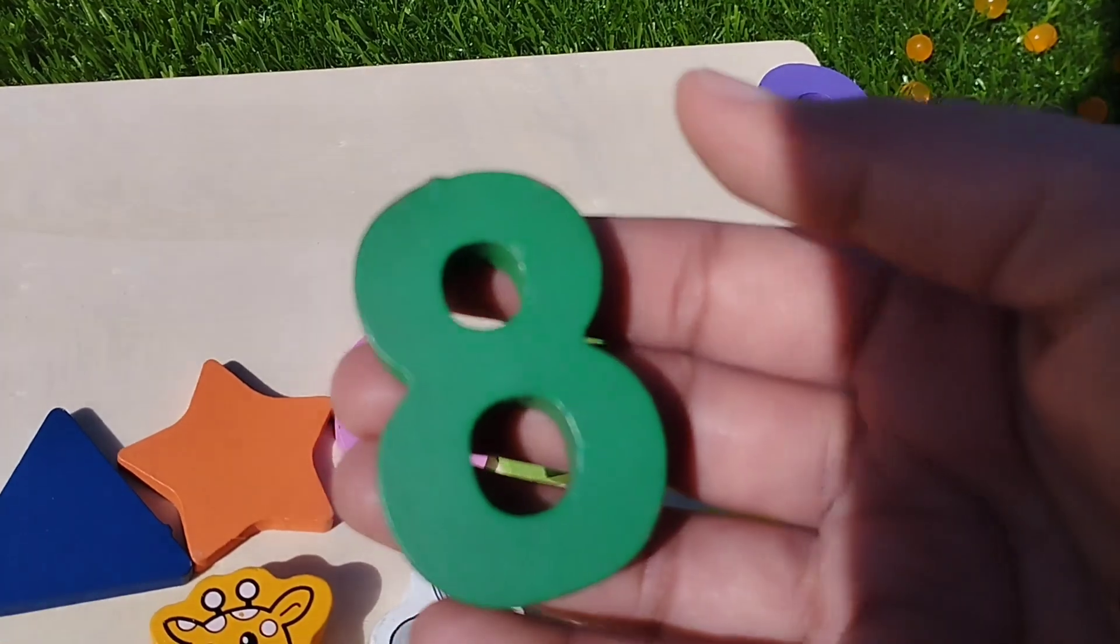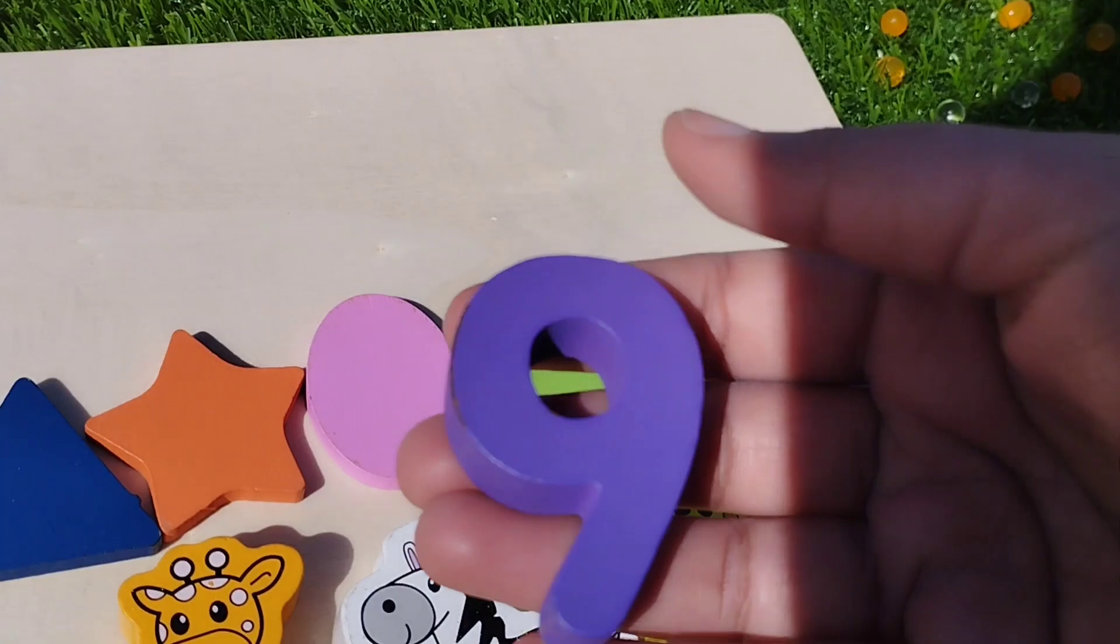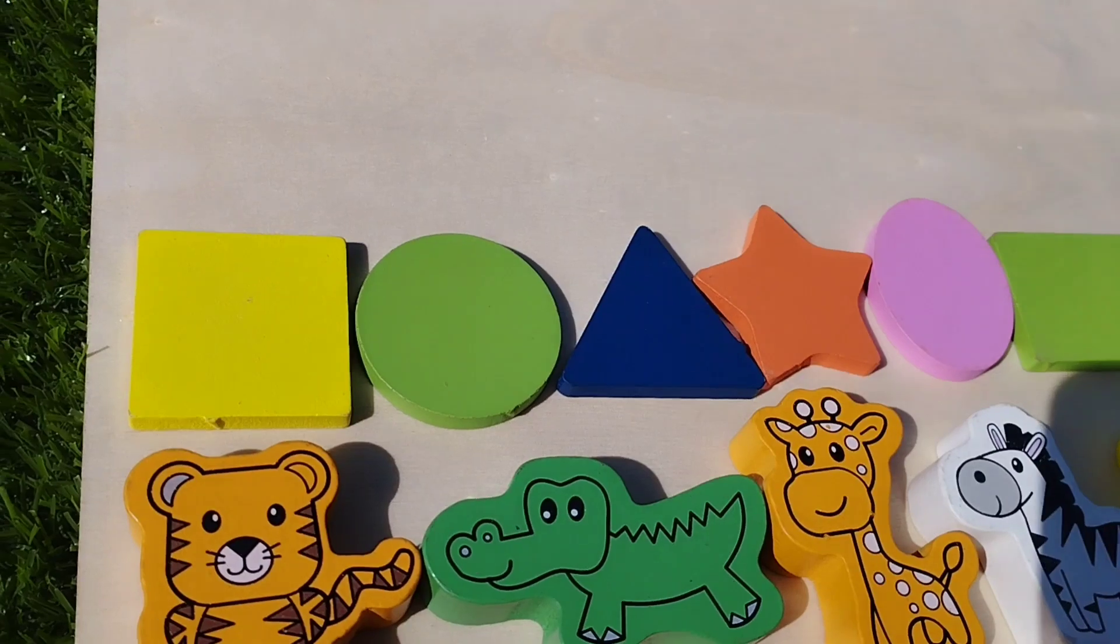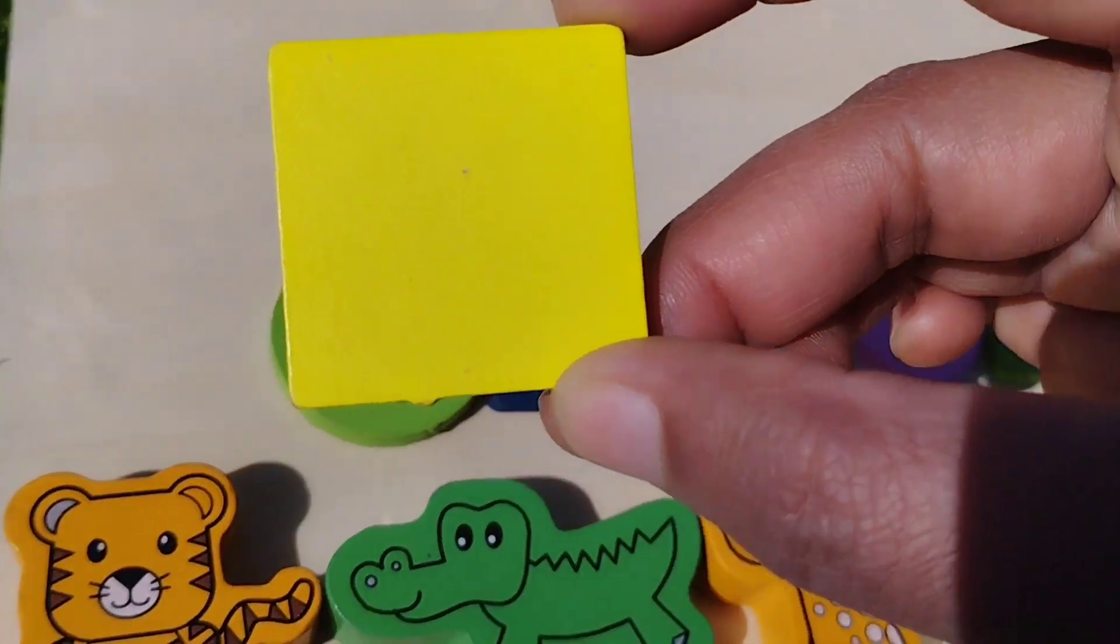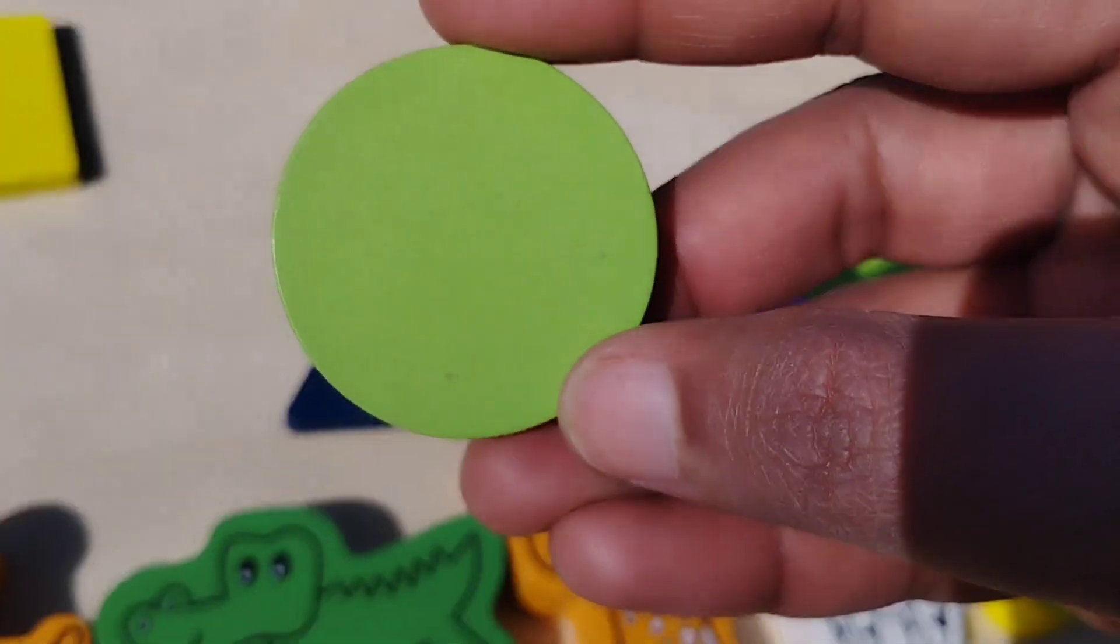The next number is eight. Number eight. And nine. Number nine. Let's learn some shapes names. Square. This is square shape.